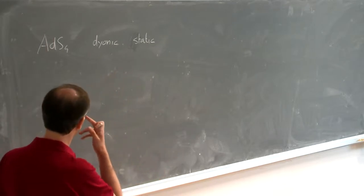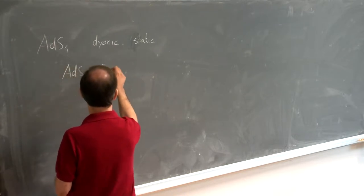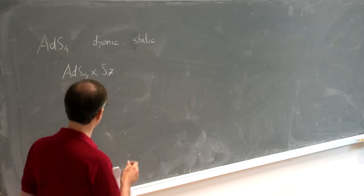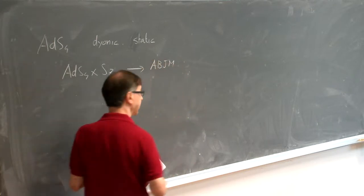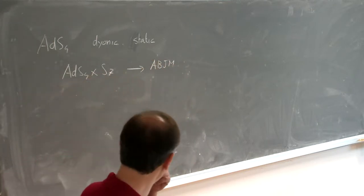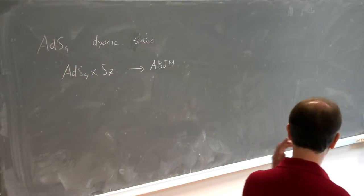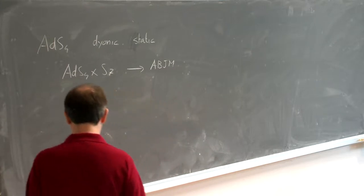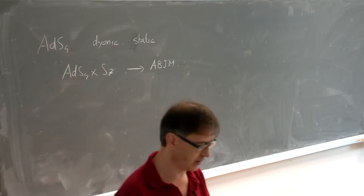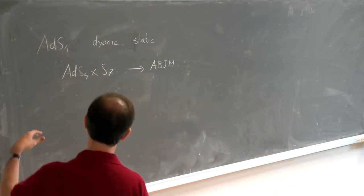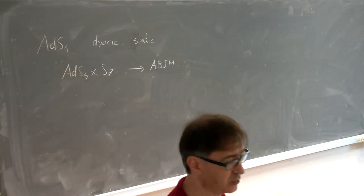The other requirement is that this black hole can be embedded in ADS-4 times S-7. The reason I mentioned yesterday is that I know the dual — that's the maximally supersymmetric background — is dual to a maximally supersymmetric field theory in 3D, which is the ABJM model. From the point of view of the black hole, it's useful not to consider the full M-theory on ADS-4 times S-7, but to perform a dimensional reduction to 4D.